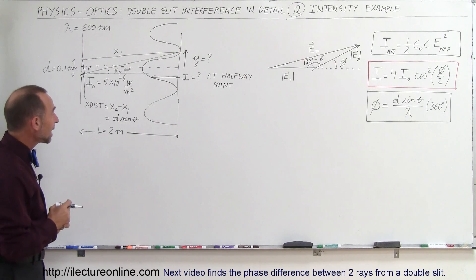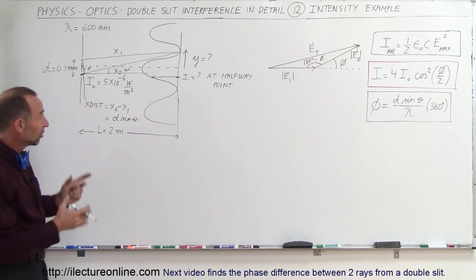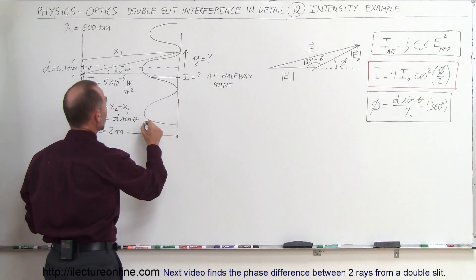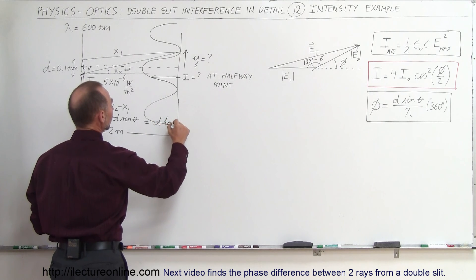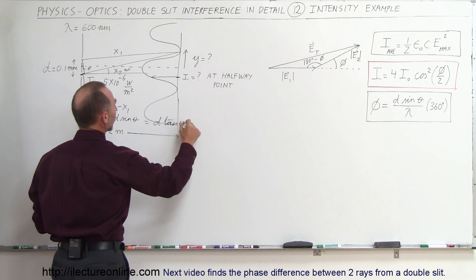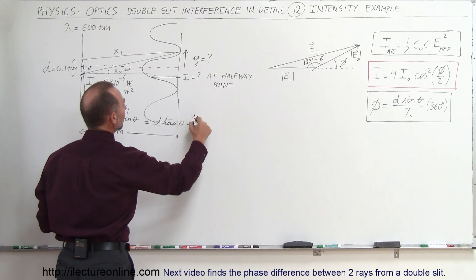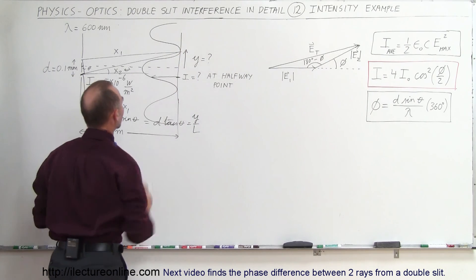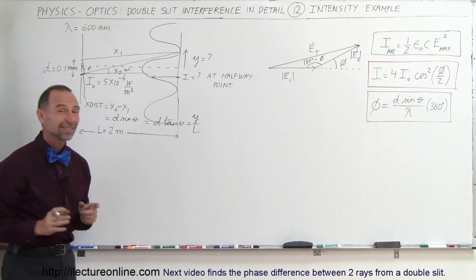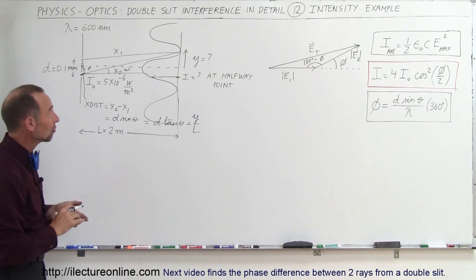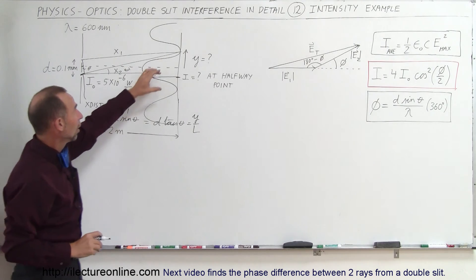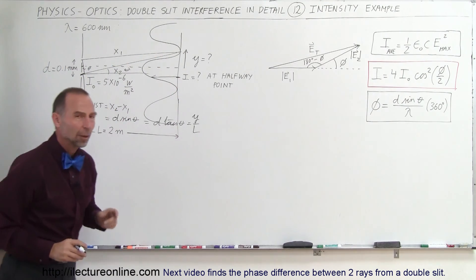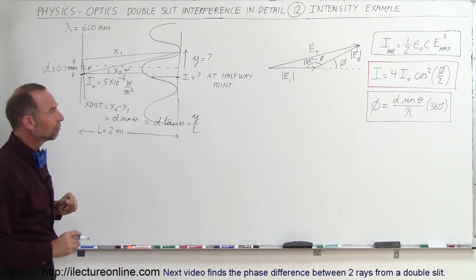Since we don't know the angle, we can say for small angles this would be equal to d times the tangent of theta, which by definition is equal to the opposite over the adjacent: y divided by l. So the extra distance traveled will be simply d times y divided by the distance to the screen. And y is what we're looking for.